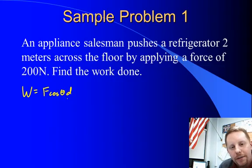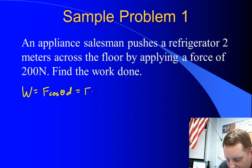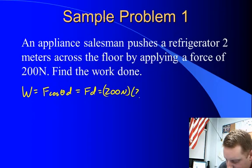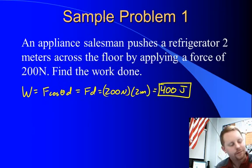The cosine of zero is one. So that's just going to be our initial force times displacement or 200 newtons times two meters for a total of 400 newton meters or 400 joules. Very straightforward problem.